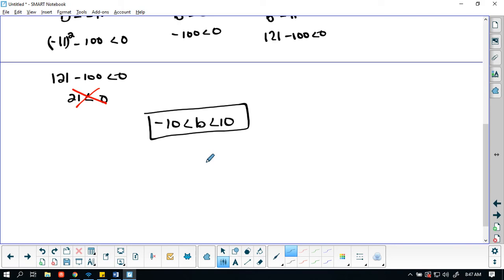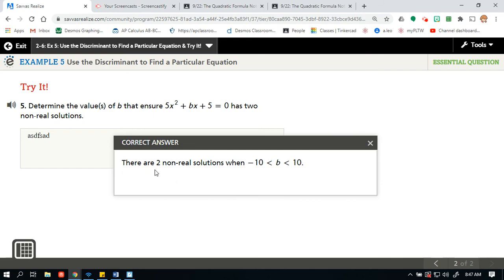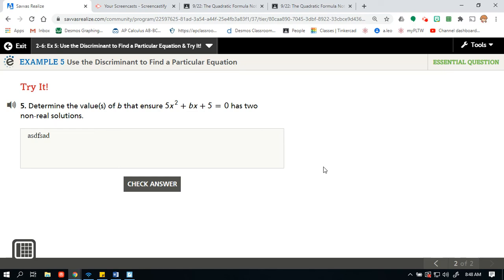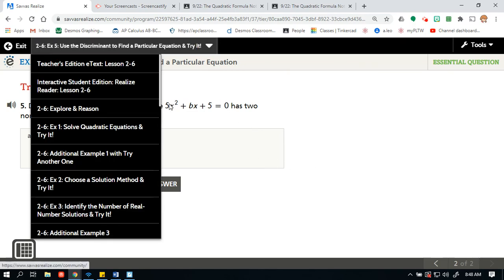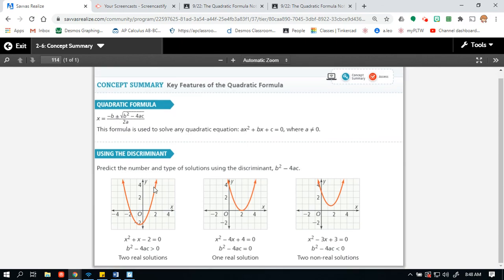So again, a little bit more complicated than the example, but we did have values. Let's see what they want us to do. So they do want, there are two non-real solutions when negative 10 less than b less than 10. So this is the way they would want you to write it out. I hope you found this video helpful. Oh, you know what, really fast before I leave this video, let's look at the concept summary. This is going to wrap everything together that you've learned in the last couple of videos, your quadratic formulas in here, and then how to use the discriminant and what the discriminant really means. So take a moment and take notes from your concept summary. I hope you guys have a fantastic day and I will see you in the next video.